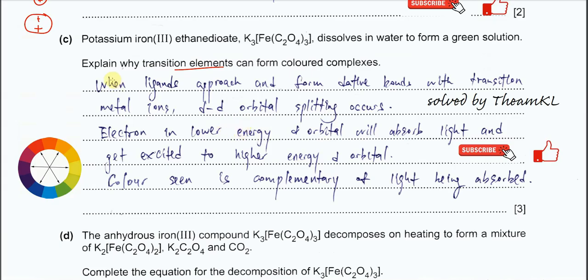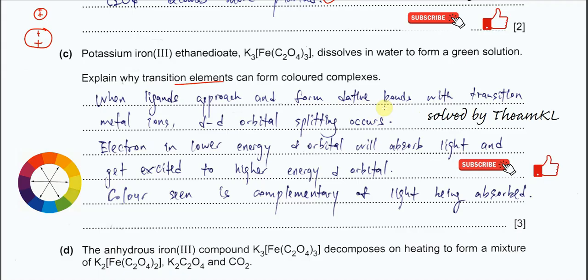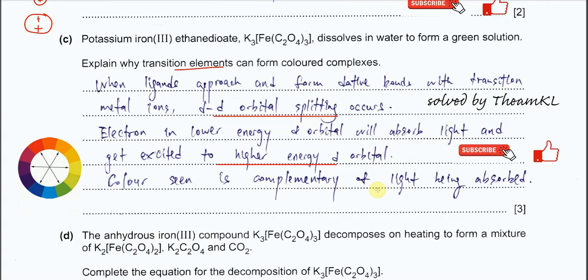We will see the complementary color of this light. So, when ligands approach and form dative bonds with the transition metal ions, d-d splitting happens. The electrons in lower energy d orbitals therefore will absorb light and get excited to higher energy d orbitals. The color seen is complementary to the light that is being absorbed. For example, if green color is the one being absorbed, we will not see this color. We will see the complementary color, which is red color. This is called complementary color.